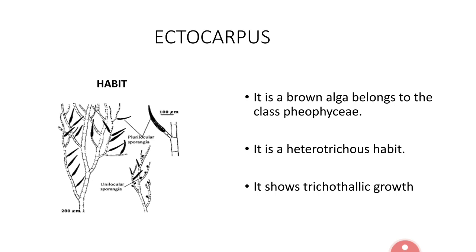Generally, erect branches show an apical hair-like cell called a trichome. The cells below the trichome are meristematic in nature as they drive the growth of the plant body — this type of growth is called intercalary or trichothalic growth. In Ectocarpus siliculosus, any cell in the erect branch can divide and contribute to growth and development of the plant body; such growth is called diffusive growth.